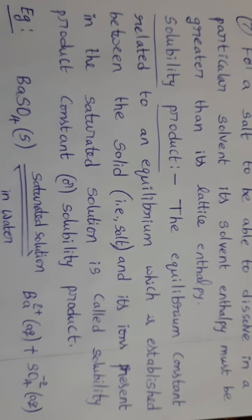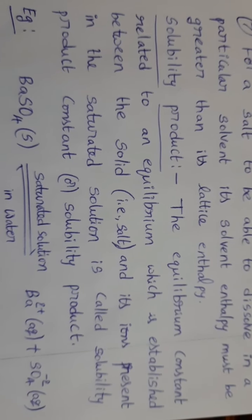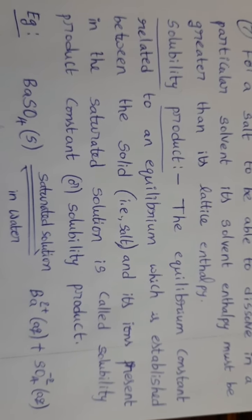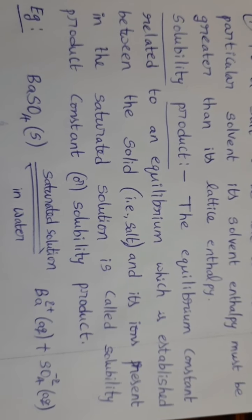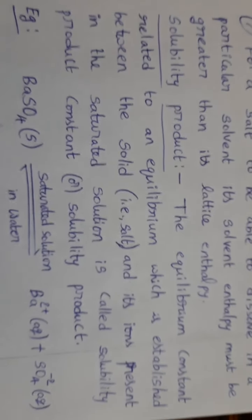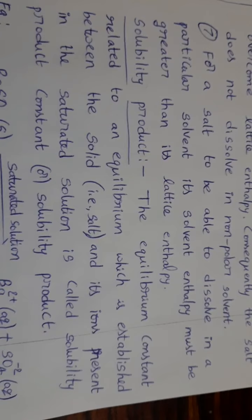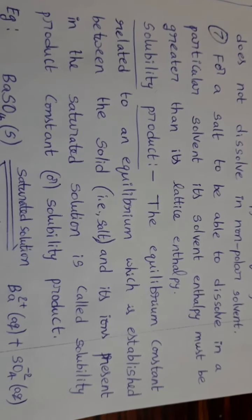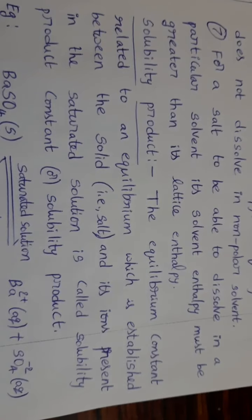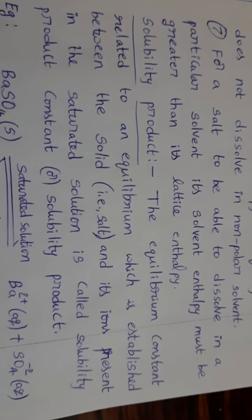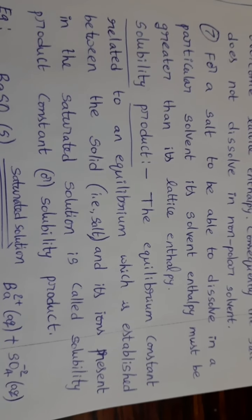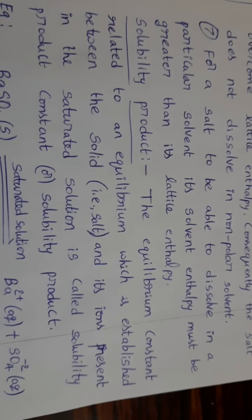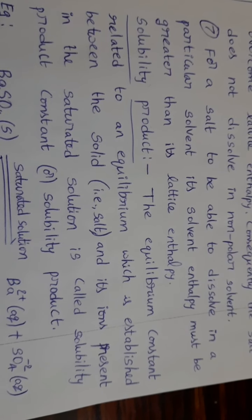Some salts do not dissolve completely in a given solvent — they can dissolve to a small extent. Such salts are called sparingly soluble salts. The solubility product is related to sparingly soluble salts. When a sparingly soluble salt is added to water, it dissolves to a small extent, forms its ions, and after some time we get a saturated solution — a solution in which no more solute can be dissolved. Here also, the sparingly soluble salt reaches its saturated state.